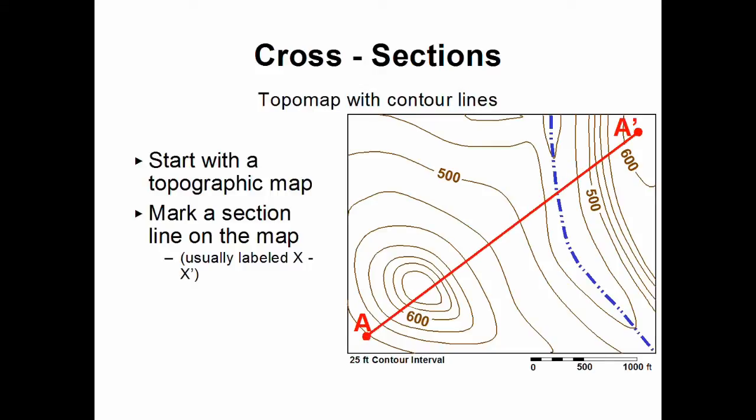In our example we use a line labeled A, A prime. A little tick mark on the A. We call this the A section. It goes across that hill you see in the southwestern corner and up to this place out of the valley in a northeastern corner.